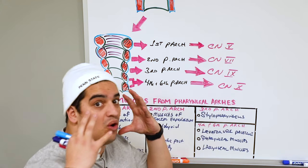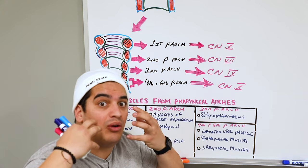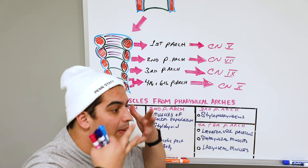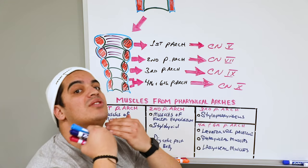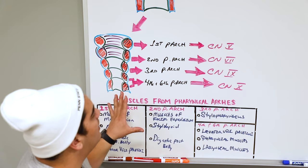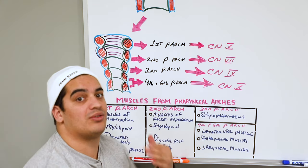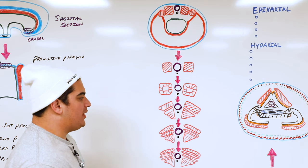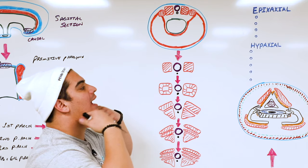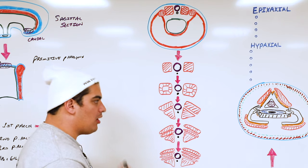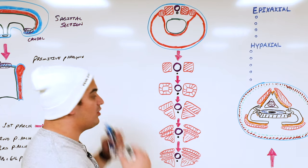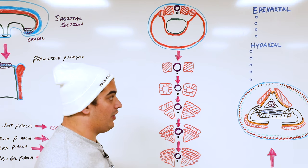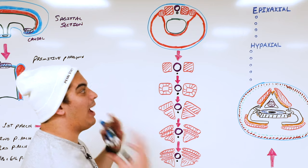Remember, we made the neurocranium and viscerocranium with all those bones and cartilage — now we're covering all of that with muscle. We now have muscles of the head and neck, specifically the suprahyoid region, derived from the pharyngeal arches. Let's now talk about the infrahyoid muscles, the strap muscles, and go into the trunk, covering both the pectoral and pelvic girdles.